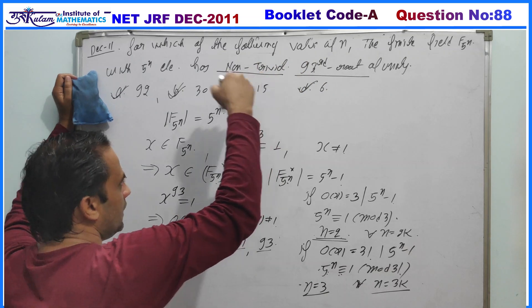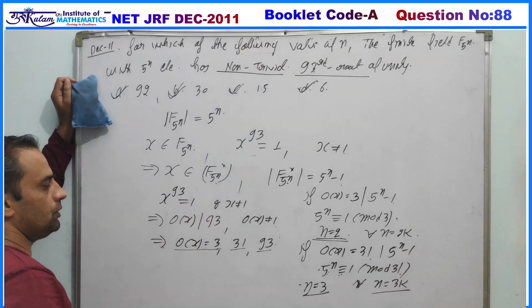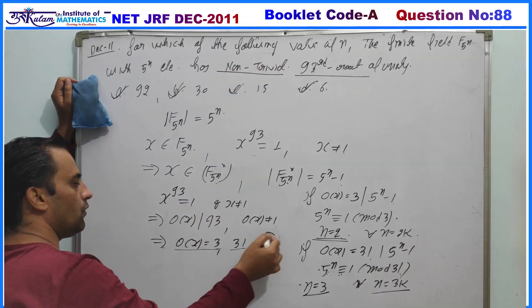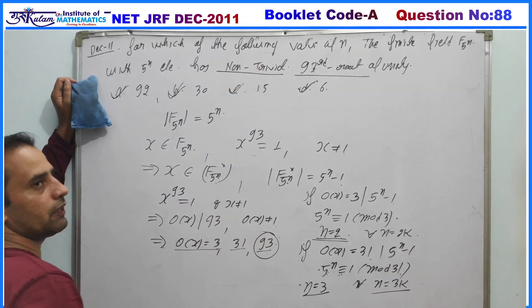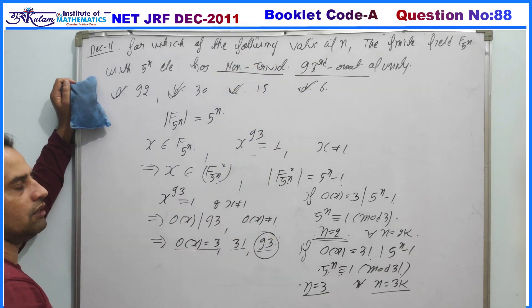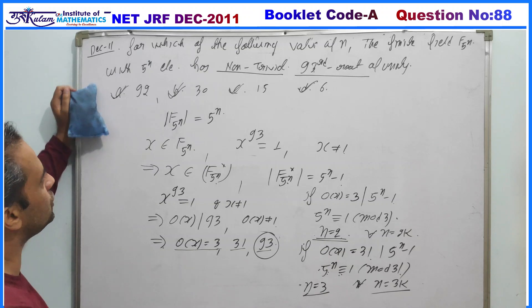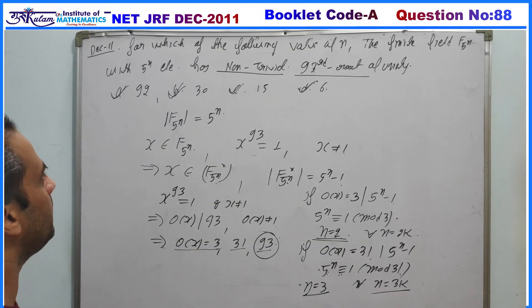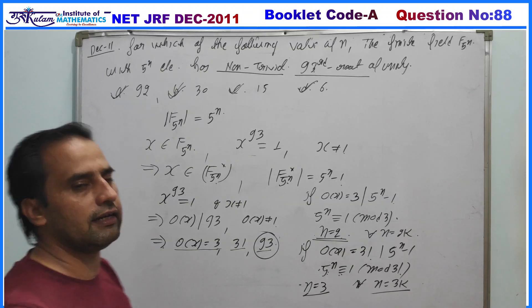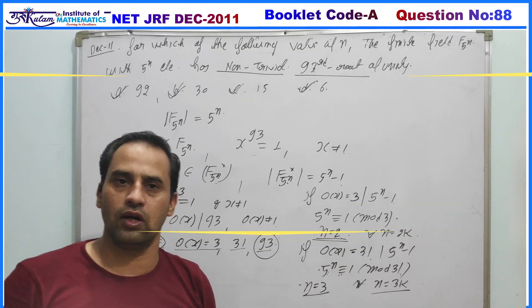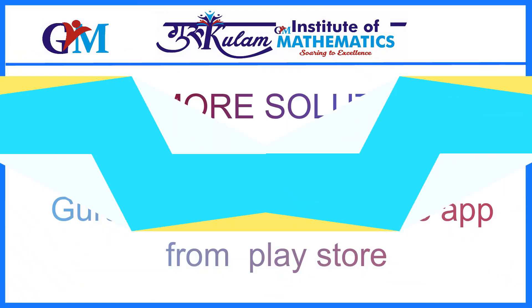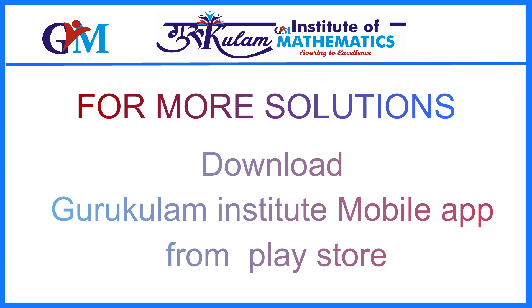If there are other options, you have to verify with respect to the 93rd root condition. Based on this analysis, the answer should be options A, B, C, and D — all four are correct options.